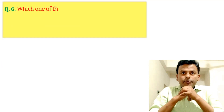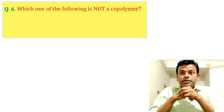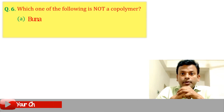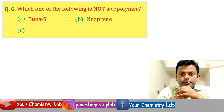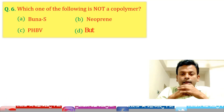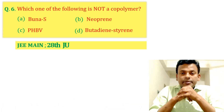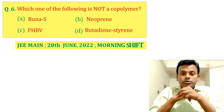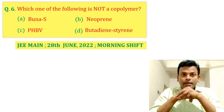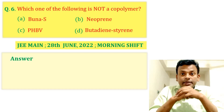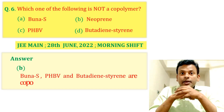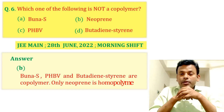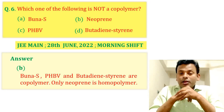Question 6: Which one of the following is not a co-polymer? Options A, B, C, and D. This question was set in JEE Main 28th June 2022 morning shift. Answer: Option B is correct. Buna S, PHBV, and butadiene-styrene are co-polymers. Only neoprene is a homopolymer. So Option B is correct.